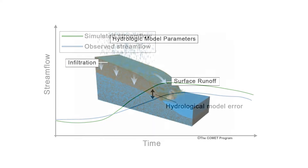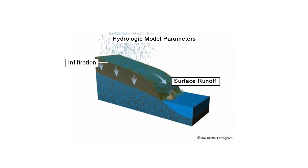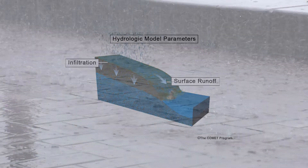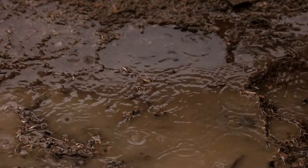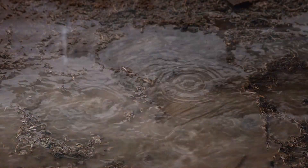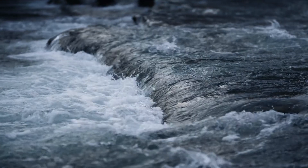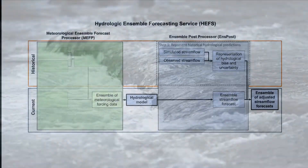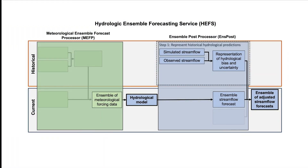This error may stem from anywhere in the hydrological modeling, such as the runoff, soil moisture, or routing parameters. This provides the first part of the representation of hydrological bias and uncertainty.